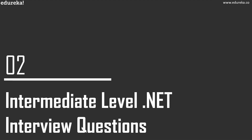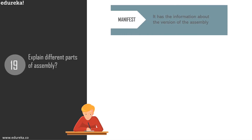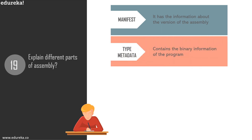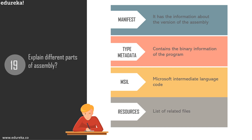The first intermediate question: explain the different parts of an assembly. The first part is Manifest, which contains version information about the assembly. Then there is Type Metadata, which contains binary information of the program. After that comes MSIL (Microsoft Intermediate Language code), a CPU-independent set of instructions that can be efficiently converted to native code. Finally, there are Resources, which is a list of all related files for the assembly.